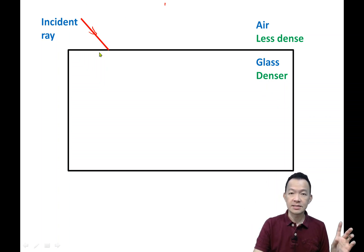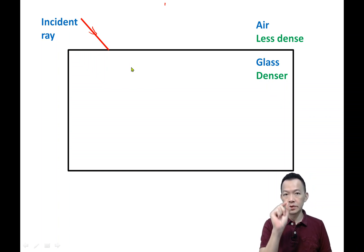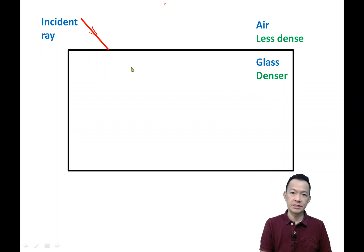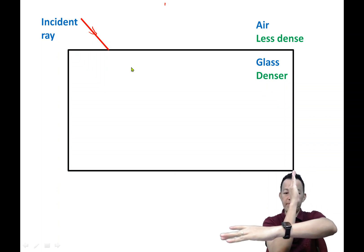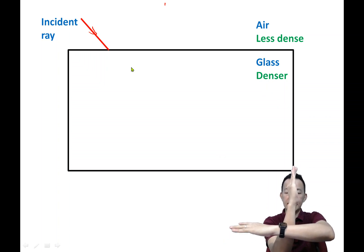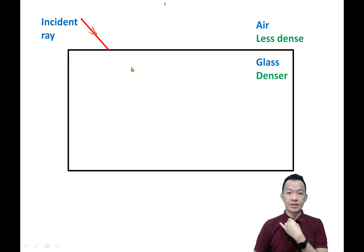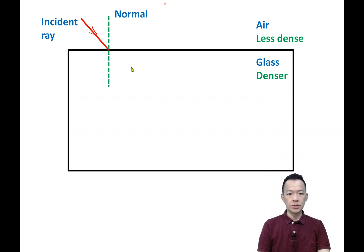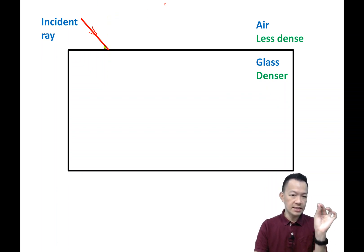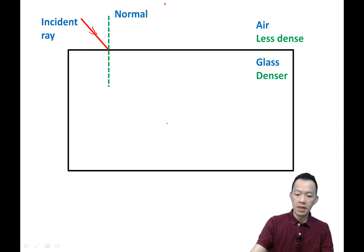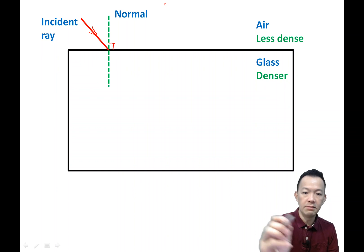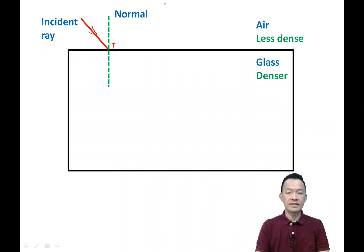So when the incident ray touches the surface of the glass, you will produce a line. But the line is not a real line — it is called the normal. Normal must be perpendicular; normal must be at a right angle to the surface of refraction.